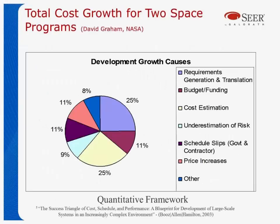From NASA, David Graham showed the reasons for cost growth in two space programs. Looking at the yellow piece, that was actually cost estimation issues — 25%. Other things included: requirements changed, budget and funding changed, they underestimated the risk, there were schedule slips on both the government and contractor side, and there were price increases. So estimation itself was 25% of the problem in their analysis — 75% was other things.